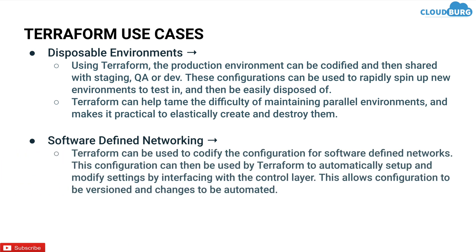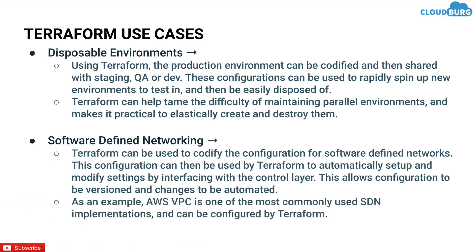Next use case is software-defined networking. Terraform can be used to codify the configuration for software-defined networks. This configuration can then be used by Terraform to automatically set up and modify settings by interfacing with the control layer, allowing configuration to be versioned and changes to be automated. For example, AWS VPC is one of the most commonly used SDN implementations and can be configured by Terraform.